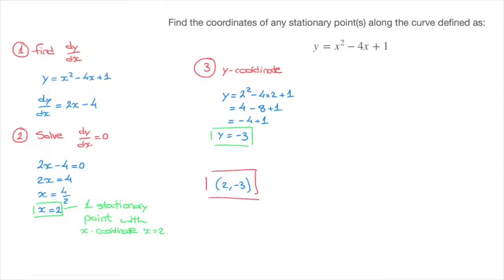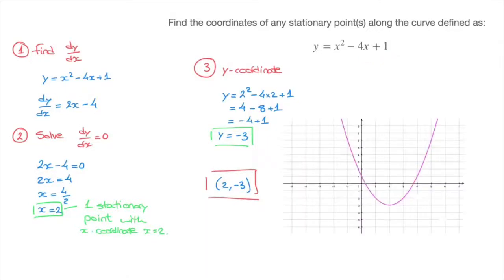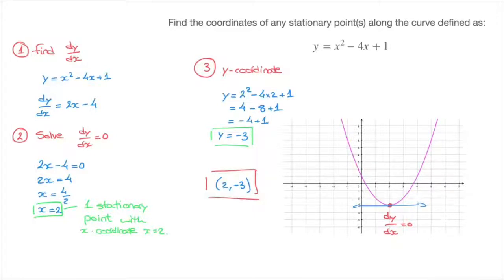We can confirm this by looking at the function's curve. Plotting y equals x squared minus 4x plus 1, we can see clearly that the curve has a stationary point with coordinates (2, −3). In fact, it's a global minimum point, where dy/dx equals zero and the tangent to the curve is horizontal.